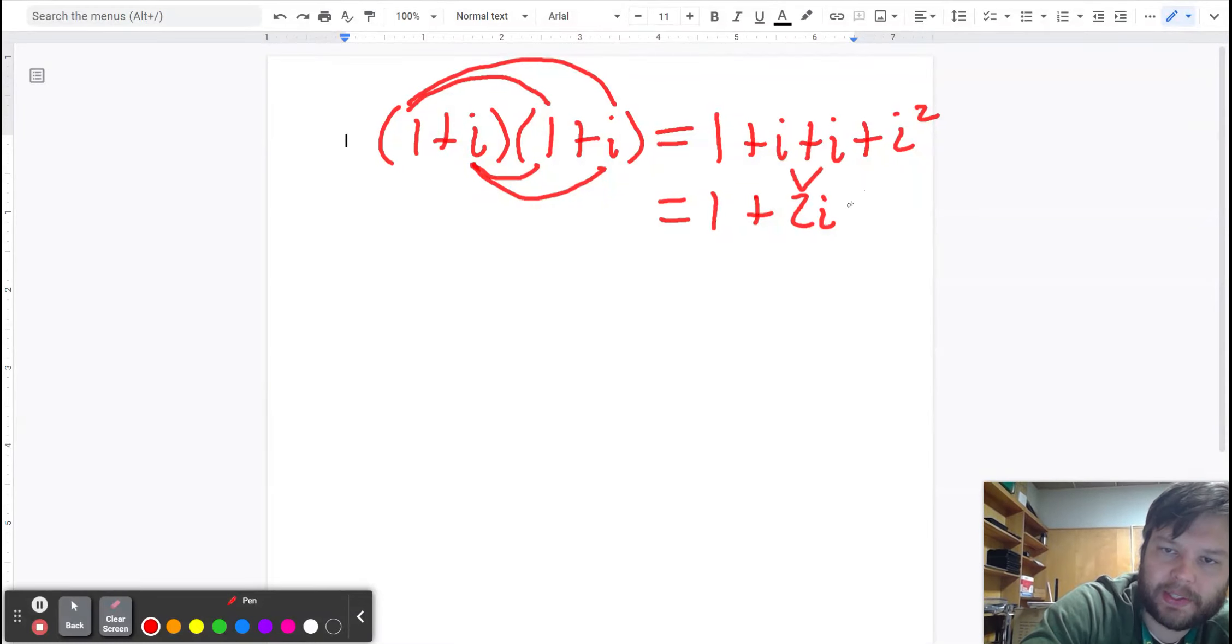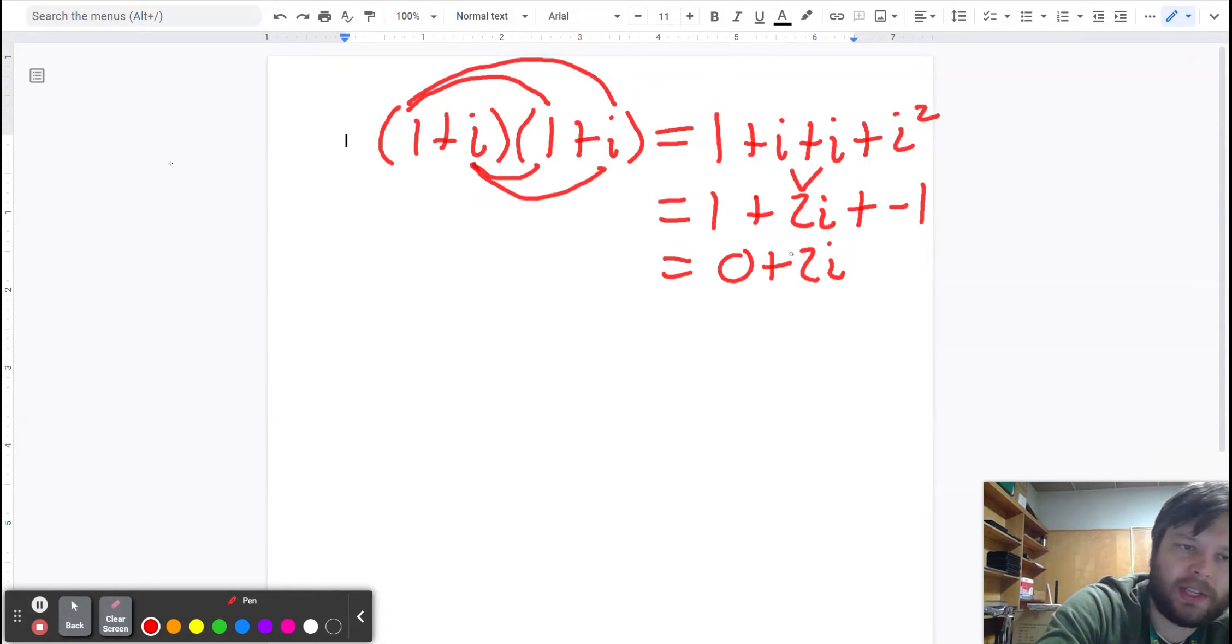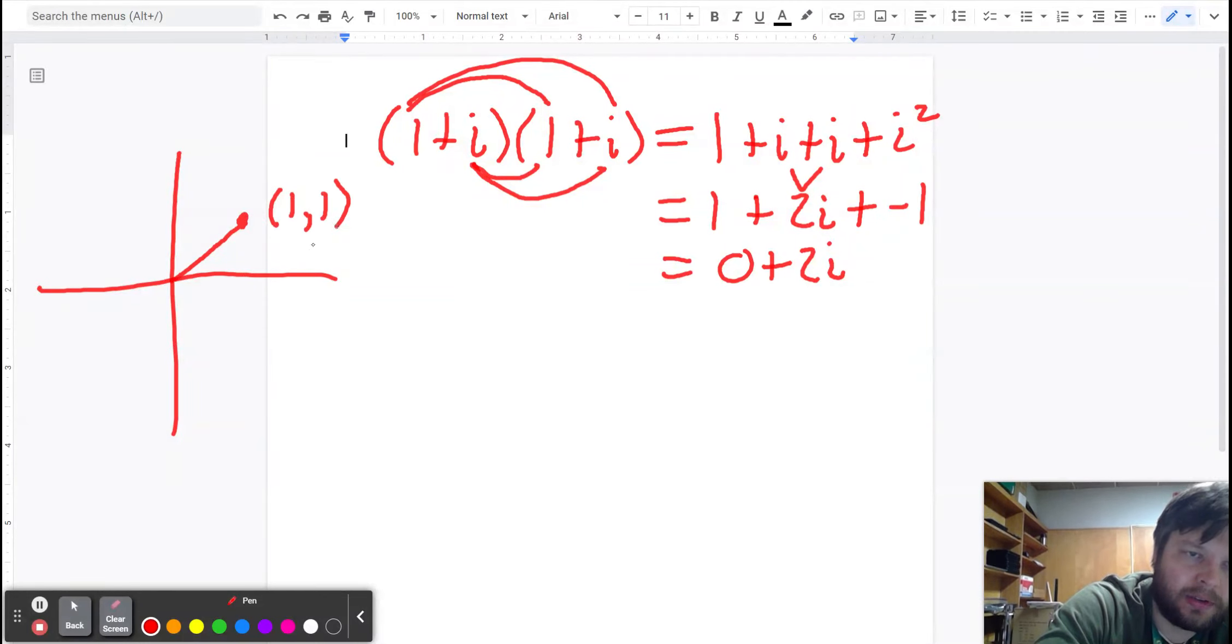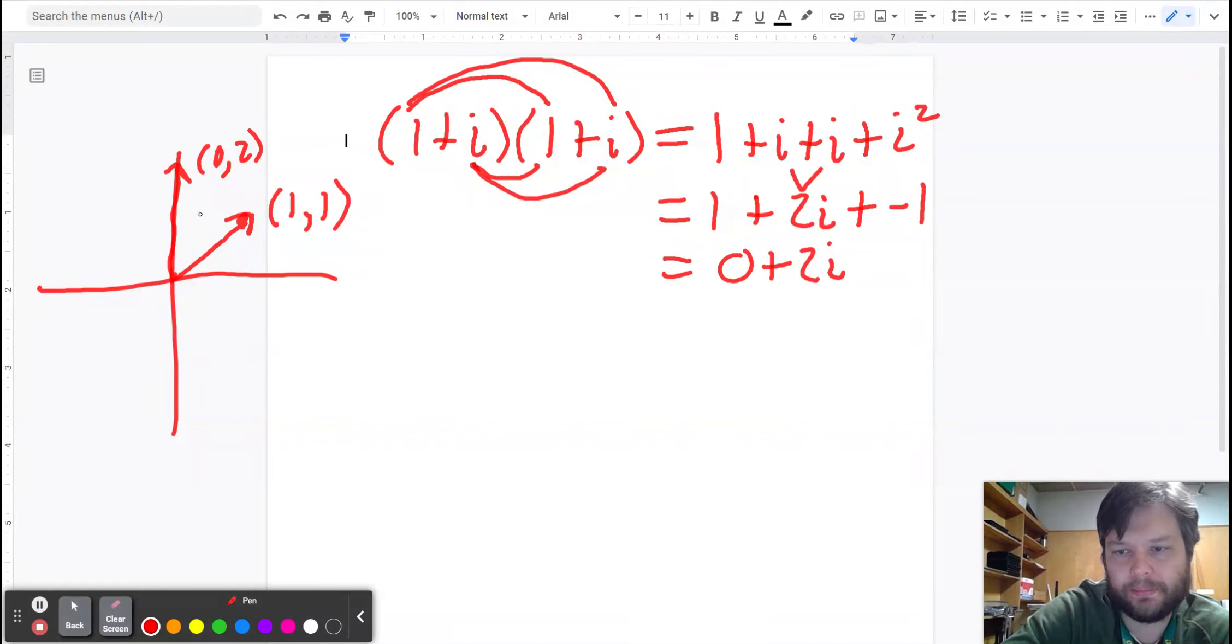We combine the two i's together. We replace i squared with negative one. Oh, well we can combine those like terms. One and negative one make zero. So I have zero plus two i. So we have an example here where we started with a complex number that was at one plus i. Multiply it by itself. We got a complex number here at zero comma two. That's kind of interesting. There's some rotation going on here.